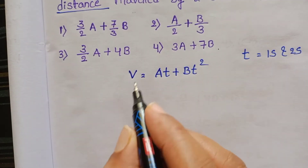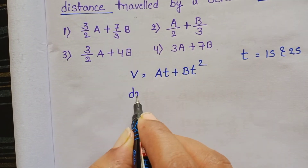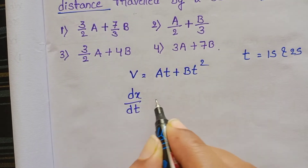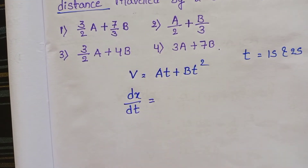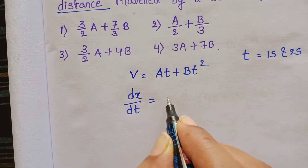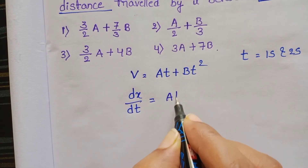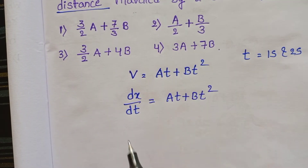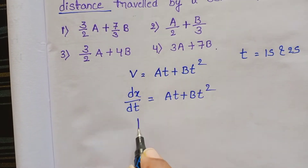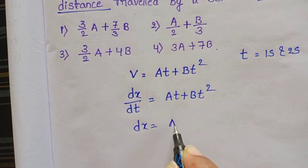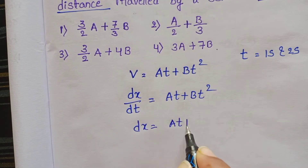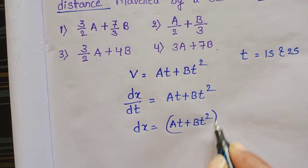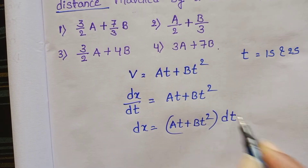In place of velocity, dx by dt equals the rate of change of displacement, so dx by dt equals at plus bt squared. From this, dx equals (at plus bt squared) dt.